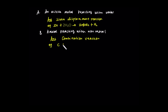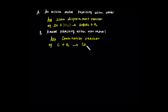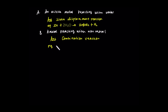For example, carbon reacts with oxygen to give carbon dioxide. Metal reacts with oxygen to give metal oxide, such as magnesium reacting with oxygen to give magnesium oxide.